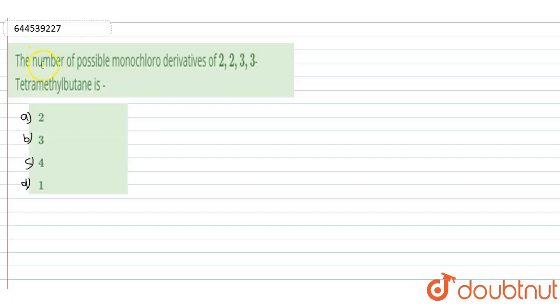Hello, the question is: the number of possible monochloro derivatives of 2,2,3,3-tetramethylbutane is A is 2, B is 3, C is 4 and D is 1.